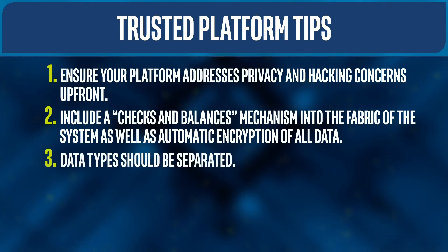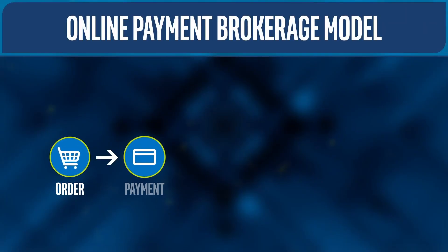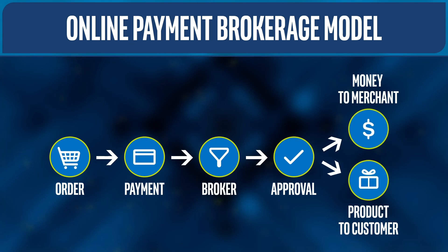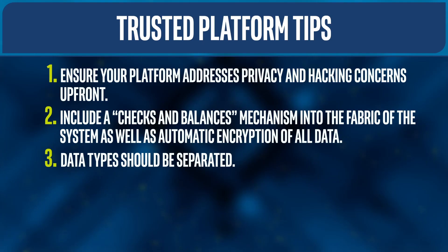Third, data types should be separated. Only the user's system should have the ability to assemble data into a cohesive picture. Think, for instance, of existing brokerage models used to pay for purchases without providing credit card details to the seller. In those cases, a product can be purchased and the seller can receive payment because of the intermediary. The same thinking could be applied to data, meaning that an application could provide a service to the user by dealing with a data broker instead of getting access to all user data to perform the action.